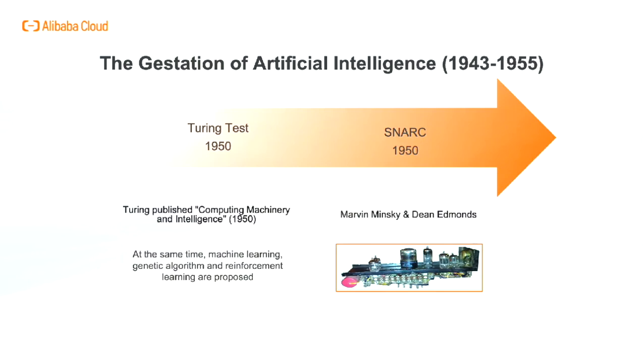The period 1943–1950 is the gestation of artificial intelligence. Two students at Harvard, Marvin Minsky and Dean Edmunds, built the first neural network computer in 1950. The SNARC, as it was called, used 3,000 vacuum tubes and surplus automatic pilot mechanisms from a B-24 bomber to simulate a network of 14 neurons. Later at Princeton, Minsky studied universal computation in neural networks. His PhD committee was skeptical about whether this work should be considered mathematics, but one member reportedly said, 'If it isn't now, it will be someday.'